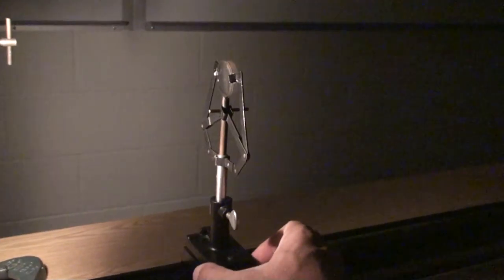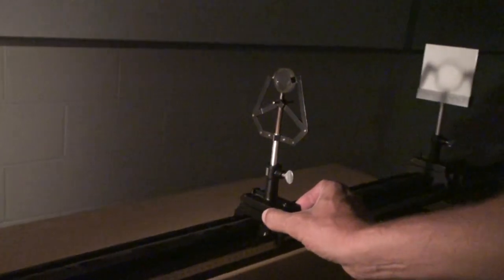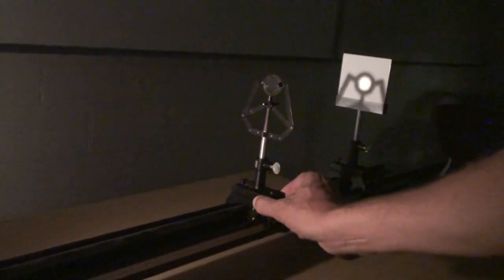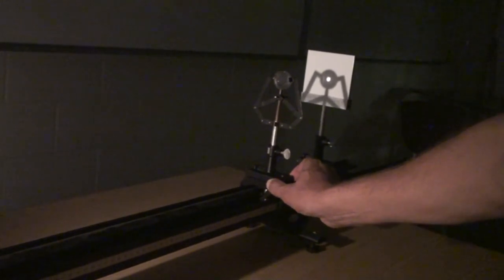Now keeping the object and screen fixed, move the lens much closer to the screen to form another image but smaller. Record this new lens position.